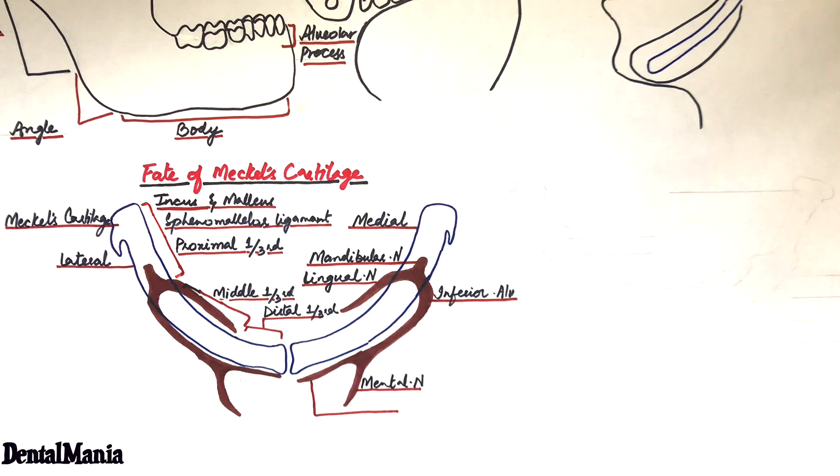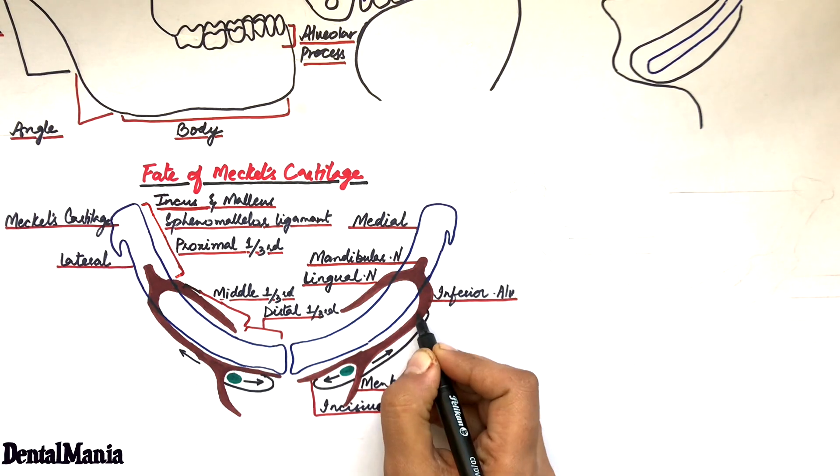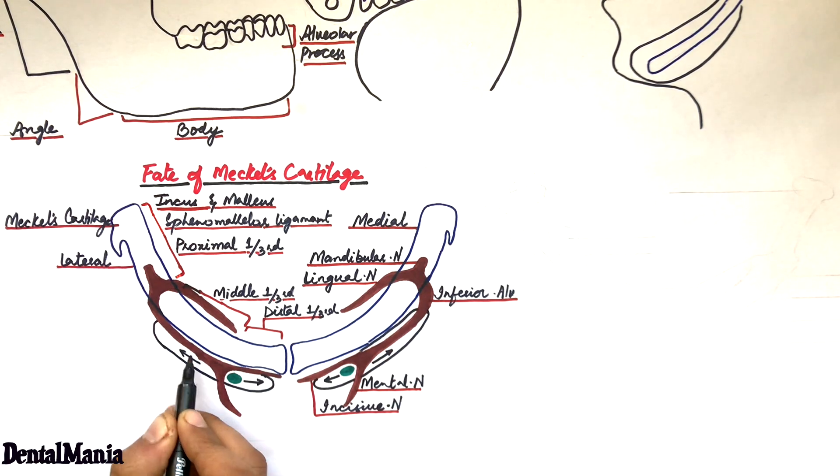At the lateral aspect of the cartilage, a mesenchymal condensation occurs at the site of the angle formed between the mental and incisive nerves. This mesenchymal condensation is considered the initial site of osteogenesis. And from this initial site of osteogenesis, intramembranous bone formation will first proceed anteriorly and then posteriorly to the point where the mandibular nerve divides into inferior alveolar and lingual nerves.